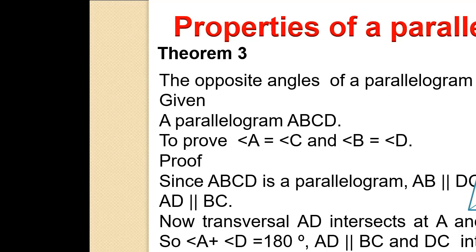AD is parallel to BC and DC intersects at D and C respectively, so Angle D plus Angle C equals 180 degrees. Therefore Angle A plus Angle D equals Angle D plus Angle C. Canceling Angle D from both sides gives Angle A equals Angle C. Similarly, Angle B equals Angle D. Hence, opposite angles are equal.